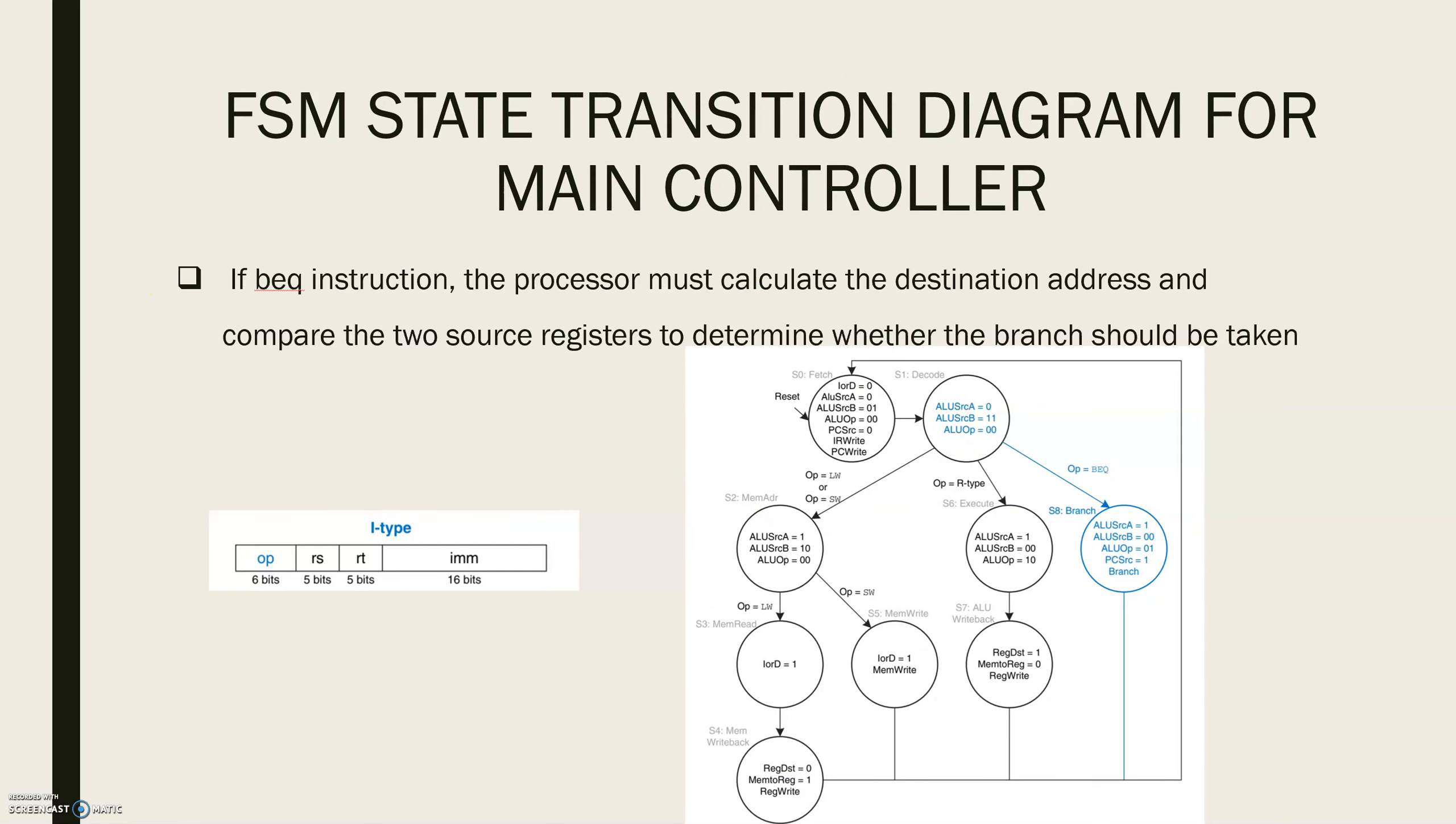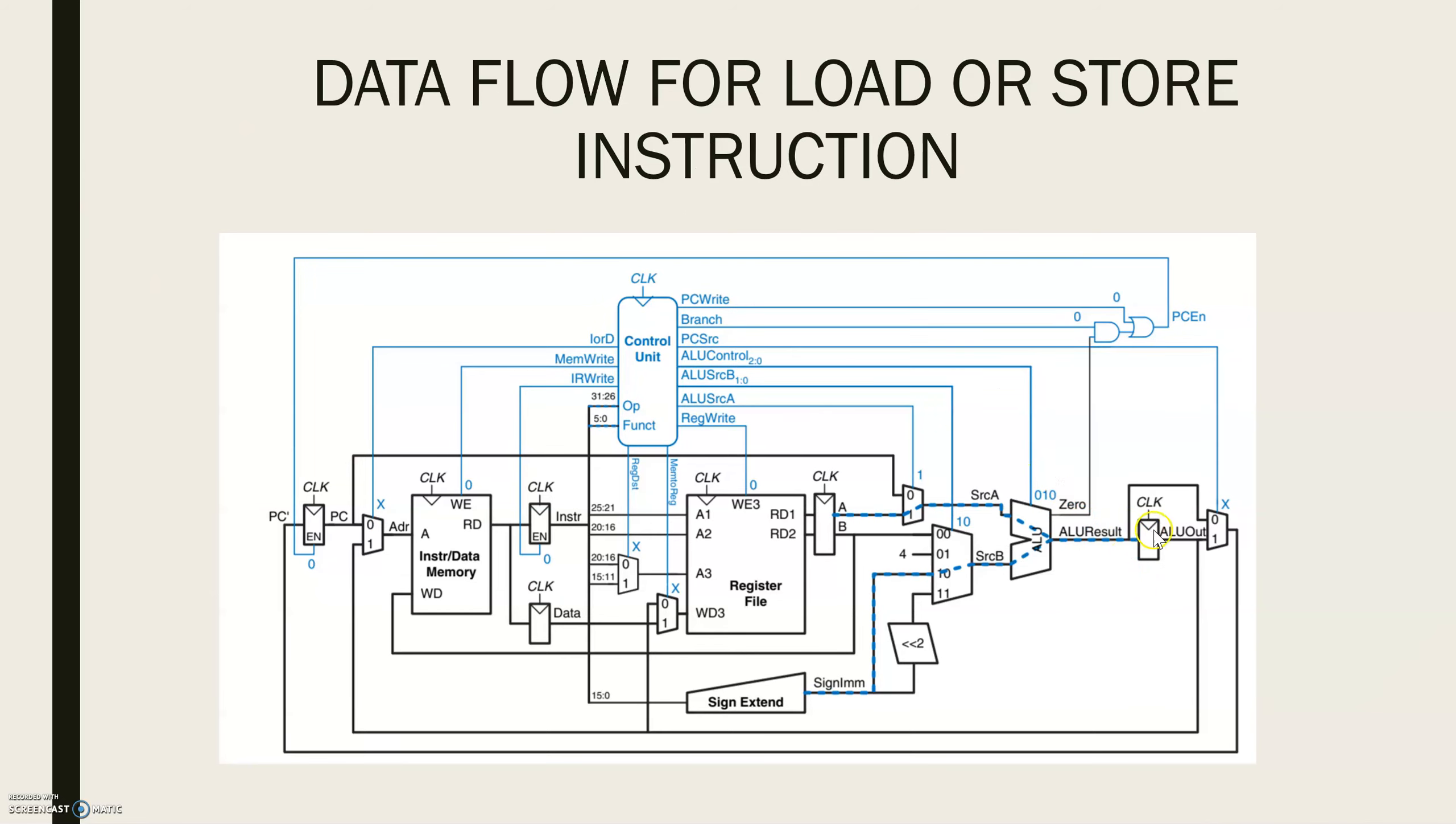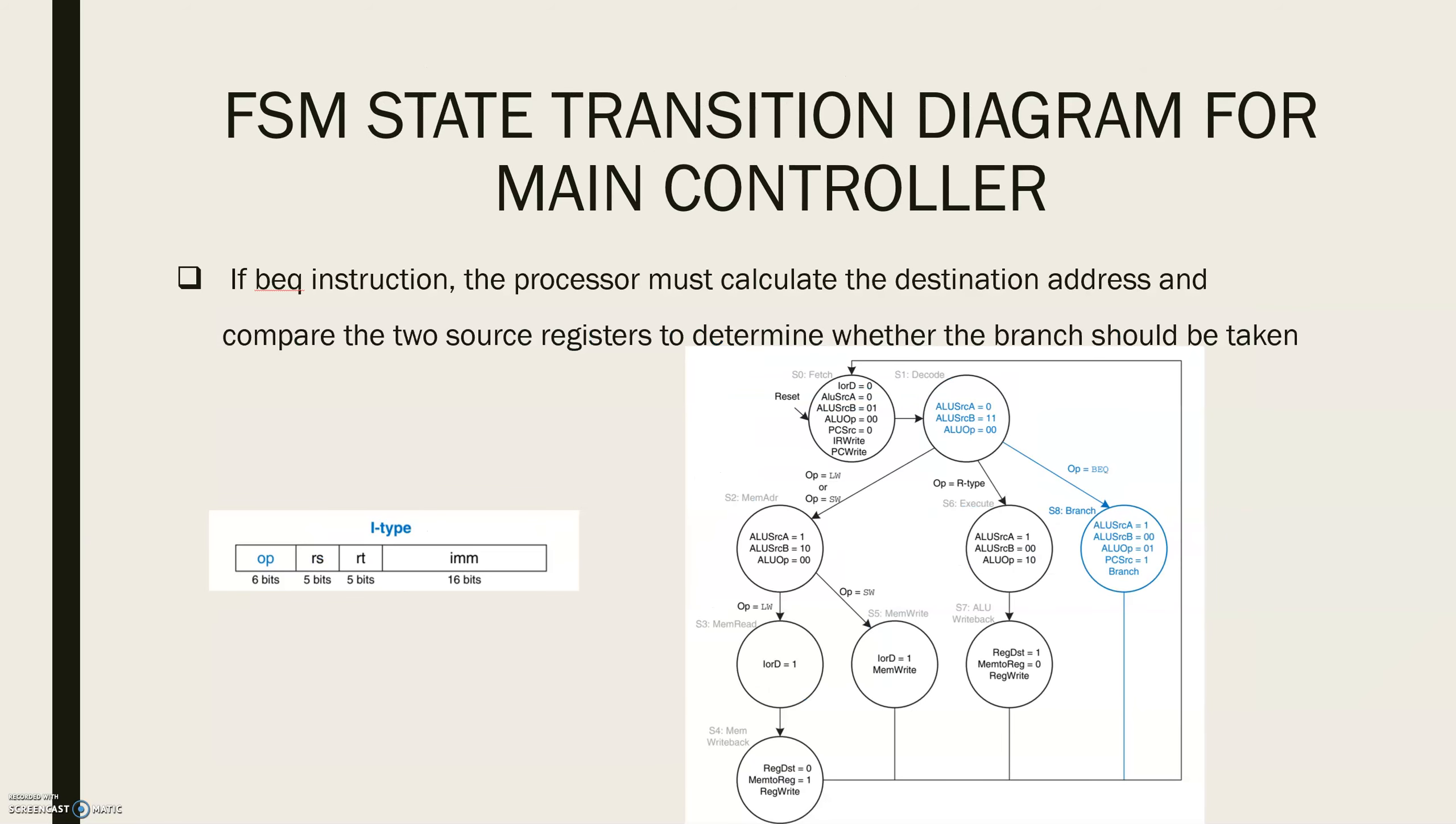The destination address is stored in ALU OUT. If the instruction is not BEQ then the computed address will not be used in subsequent cycles but its computation was harmless.